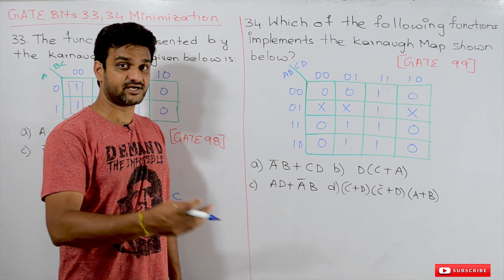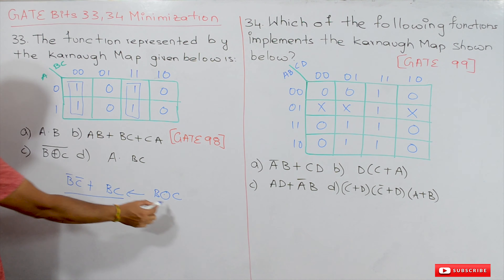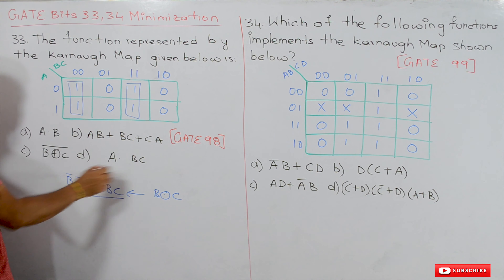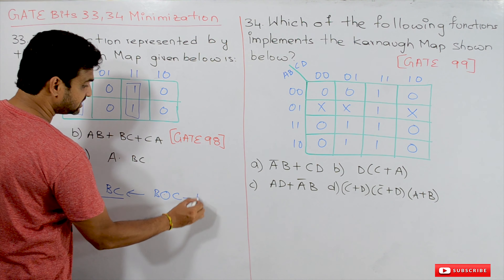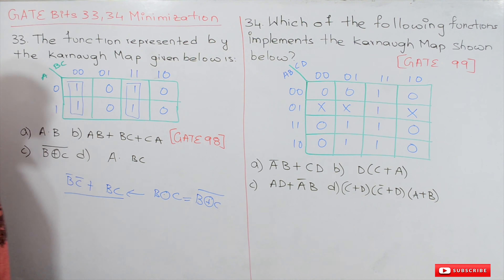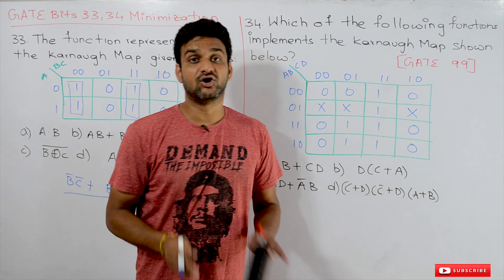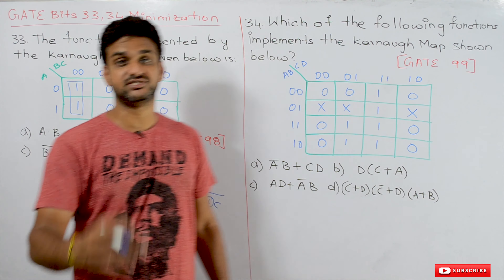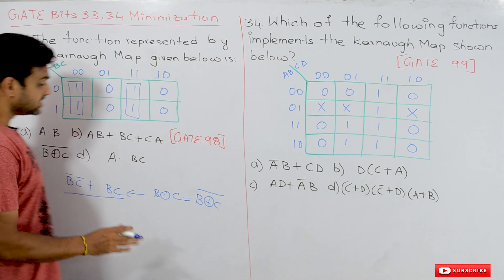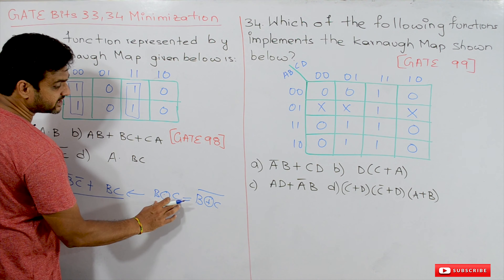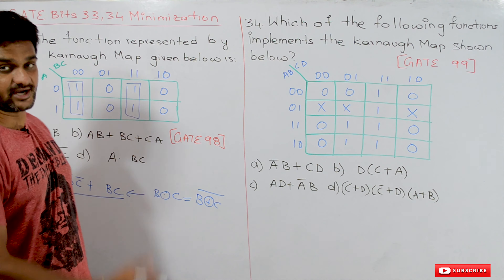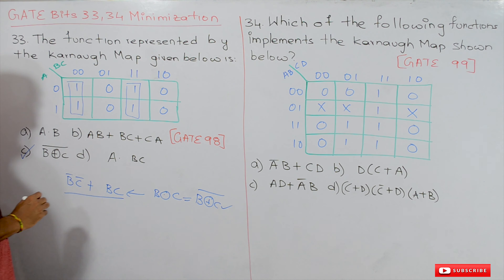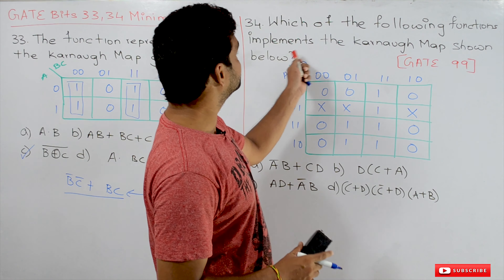So what this boolean function represents is B XNOR C, which is the complement of XOR. Since B XNOR C is not directly listed in the options, we recognize that B XNOR C equals (B XOR C) whole complement. This has been discussed in our section on logic gates and boolean algebra. So the final answer is B XOR C whole complement, i.e., (B⊕C)'.